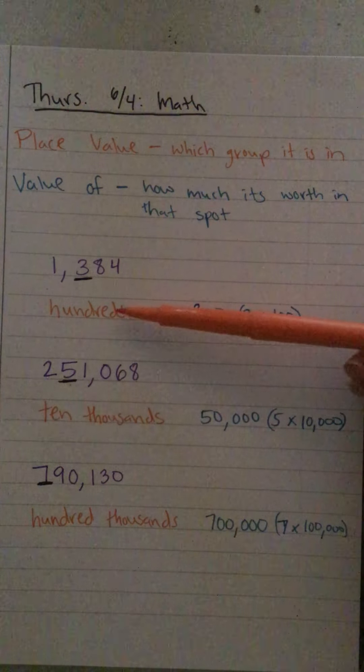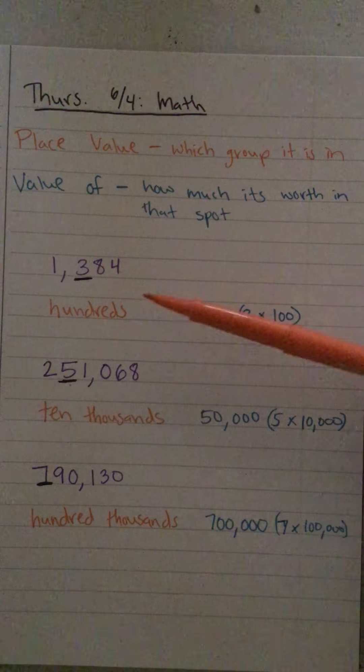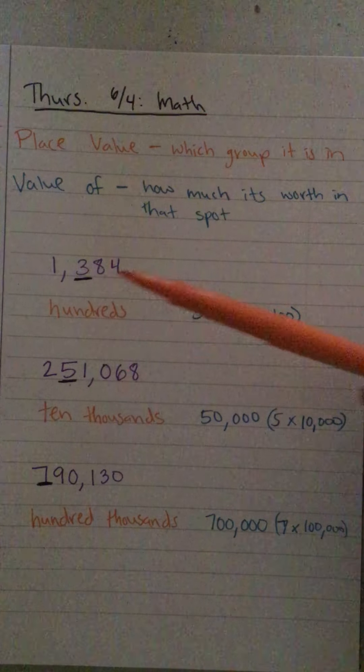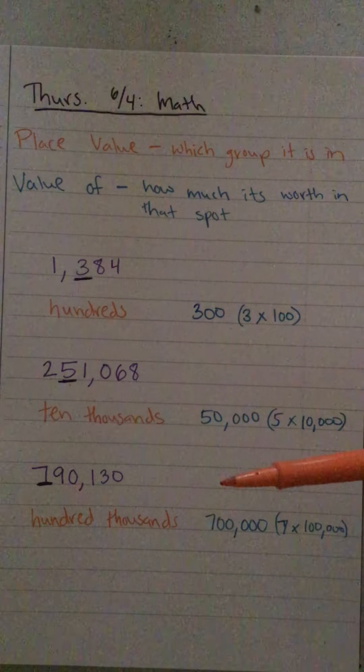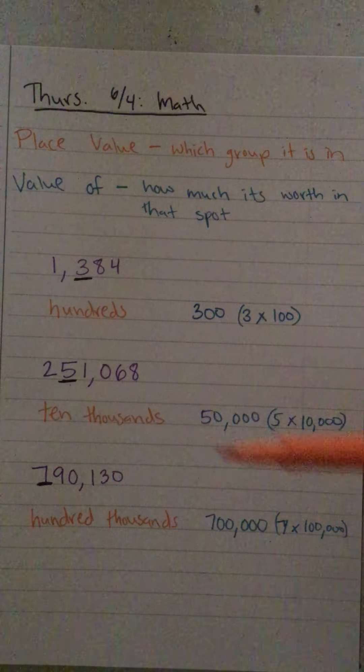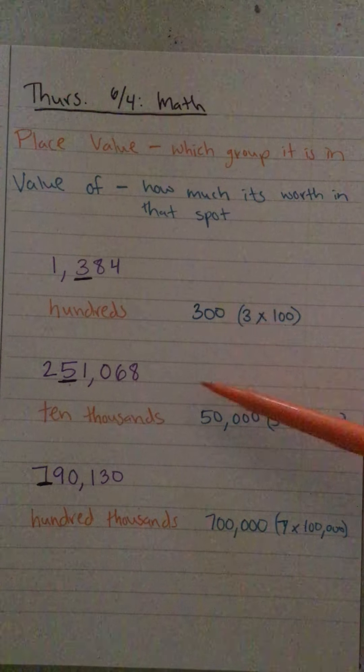So remember that difference: the place value is just wanting to know what group it is in - ones, tens, hundreds, thousands, ten thousands, or hundred thousands. The value of is how much is it worth.